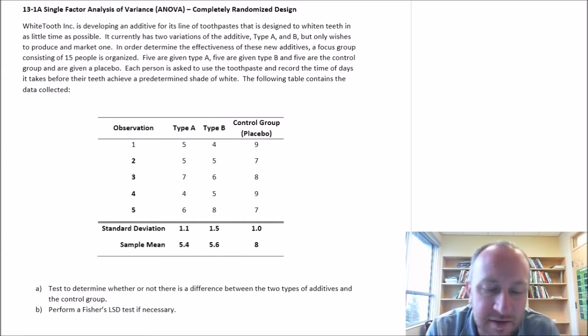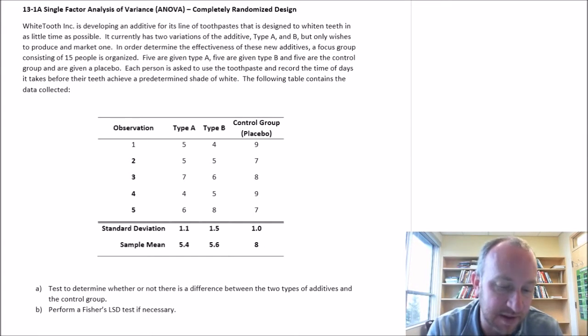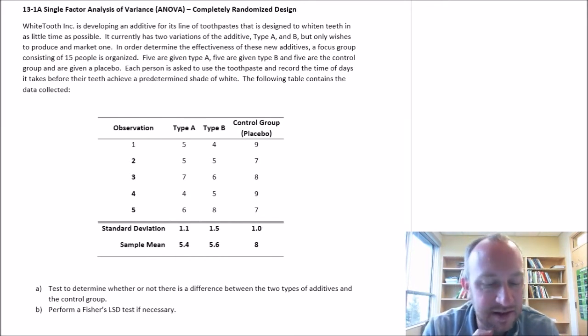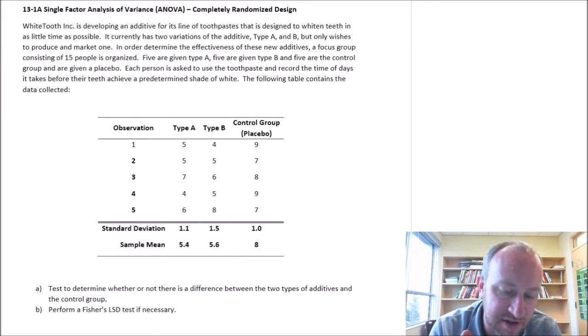So here we have WhiteTeeth Inc. developing an additive for its line of toothpaste designed to whiten teeth in as little time as possible. It currently has two variations of the additive, type A and B, but only wishes to produce and market one. In order to determine the effectiveness of these new additives, a focus group consisting of 15 people is organized. Five people are given type A, five people are given type B, and five are the control group given a placebo.